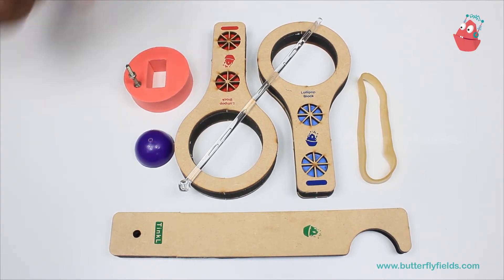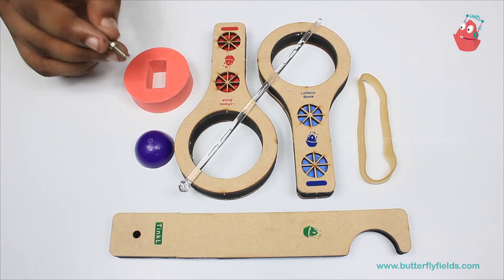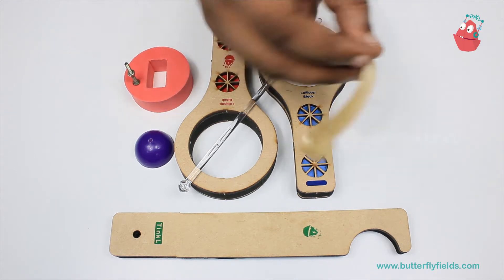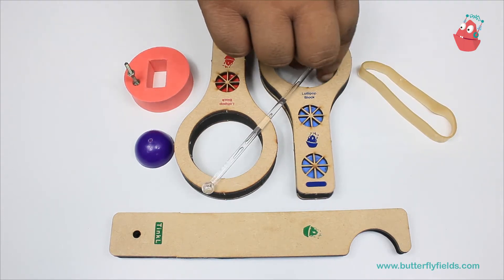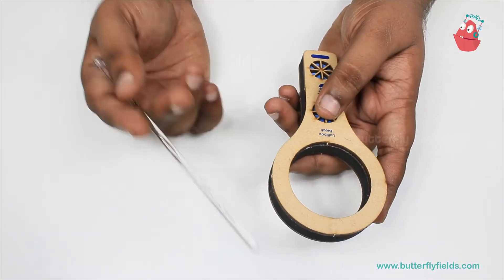This catapult hand, this cup with a hole, this stand bit, a nut and bolt, these two lollipop blocks, an elastic band, and this plastic stick. Let's get started. At the beginning, we'll have to make a few preparations.